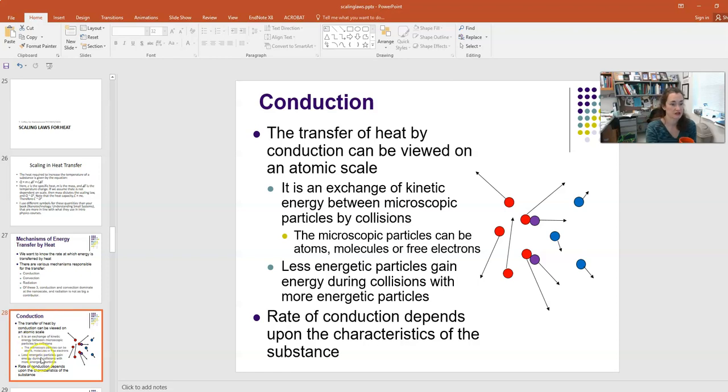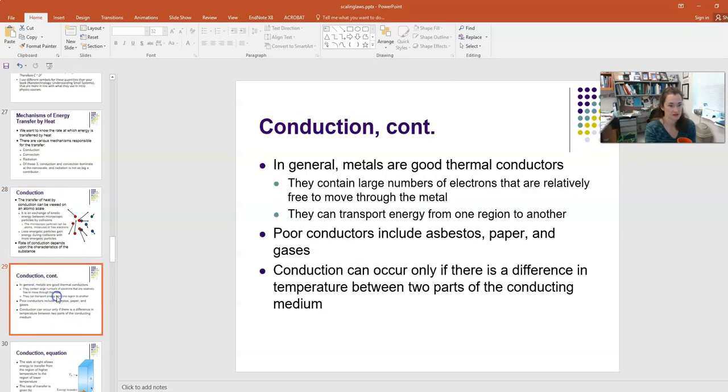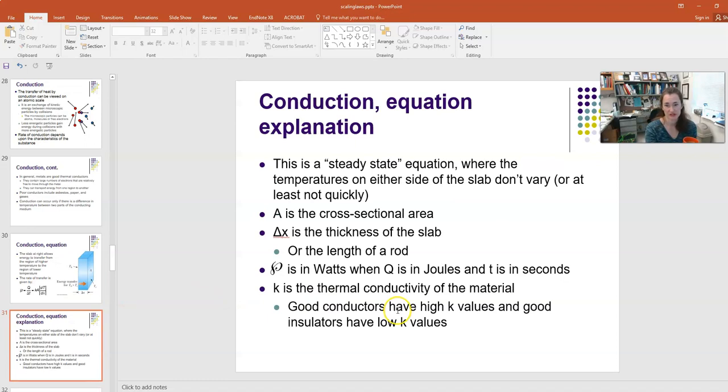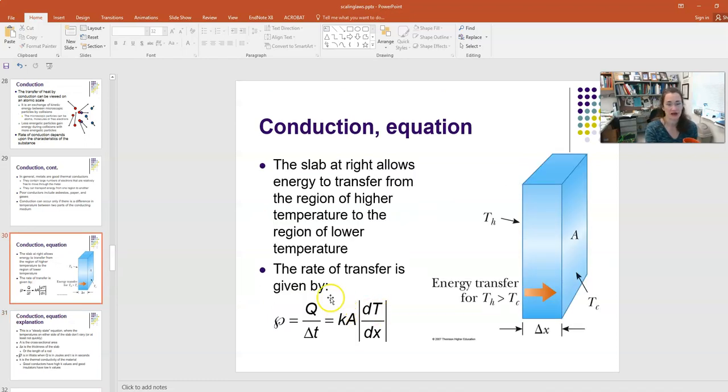Now, the rate of conduction depends upon the characteristics of that substance. So in general, metals are good thermal conductors because they have all those free electrons that just roam around. But poor conductors include things like asbestos, paper, and gases. Conduction can only occur if there's a difference in temperature between two parts of the conducting medium. Otherwise, you don't have any net conduction of energy.